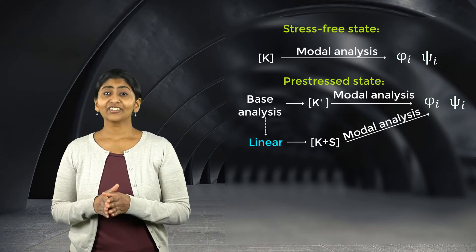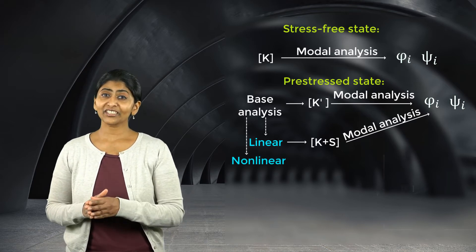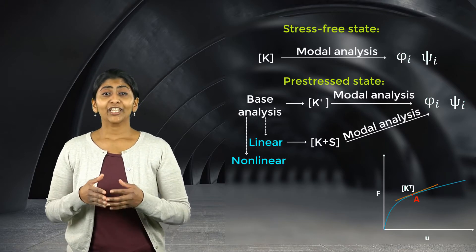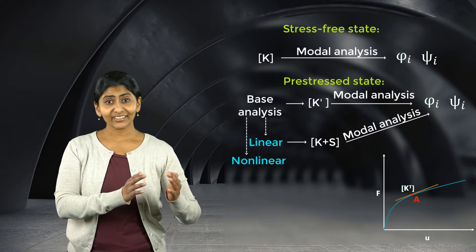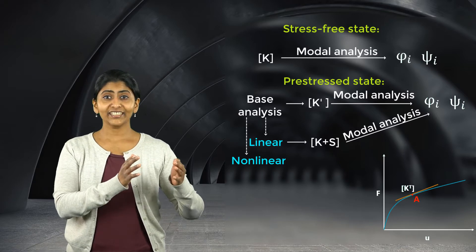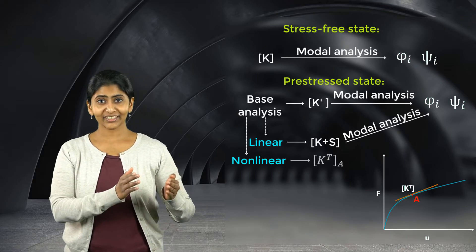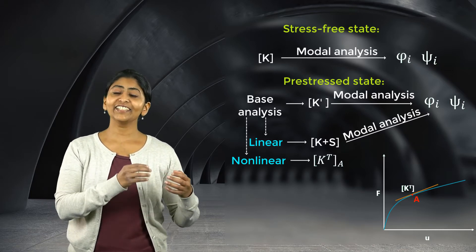On the other hand, if the base analysis is nonlinear, then the system stiffness changes with the deformation. So if we wish to calculate the natural frequencies of the system at a certain state of deformation, then we freeze that nonlinear state, calculate the tangent stiffness matrix, and then use that tangent stiffness matrix in the linear perturbation.